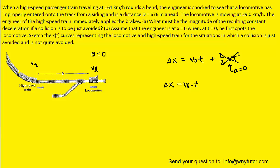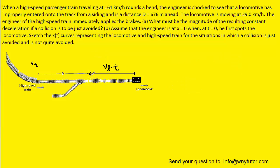We're going to show the locomotive moving forward a little bit, and the displacement it moves forward with will be VL times T. While the locomotive is moving forward, the high-speed train is actually gaining on it, and we're trying to avoid a collision. So eventually the high-speed train is going to catch up with the locomotive.